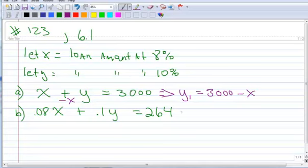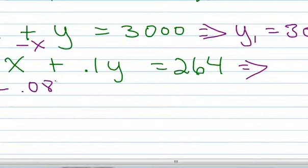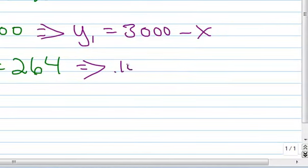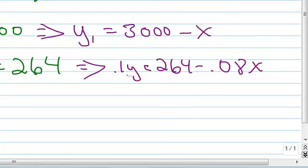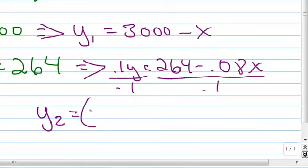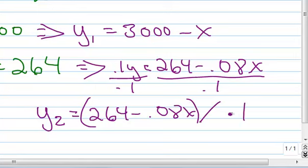And then let's change the second one into Y equals. I'm going to do that by first subtracting .08X from each side. So then I've got .1Y equals 264 minus .08X. And now I want to divide by .1. But watch how I can write it since I'm going to graph it anyway. I could write this as this whole quantity, 264 minus .08X divided by .1. No need to divide that out. You're just going to type that right in the calculator.